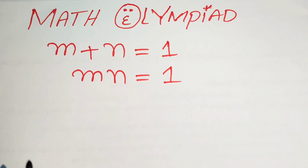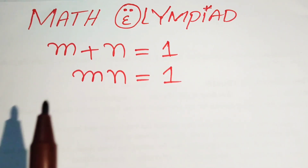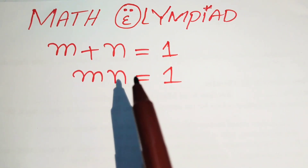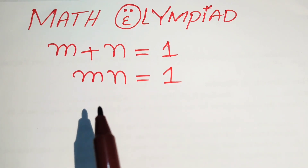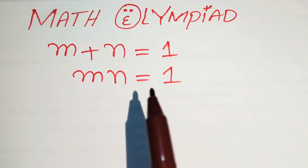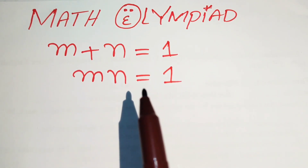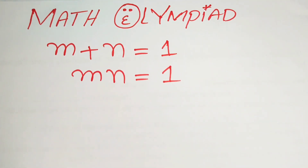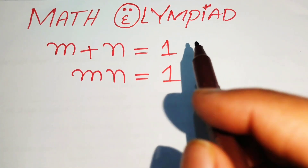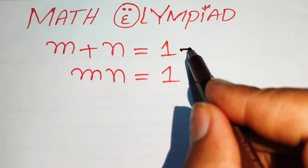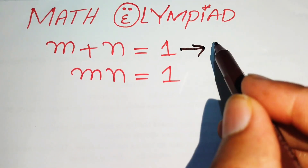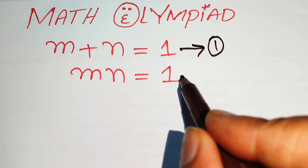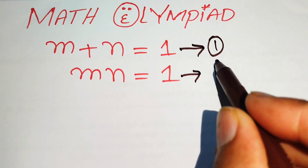Hello everyone, welcome. We are going to solve this algebra problem where we have m plus n equals to 1, and m multiplied by n equals to 1. We will solve this problem for the values of m and n. We call the first equation as equation number 1 and the second as equation number 2.